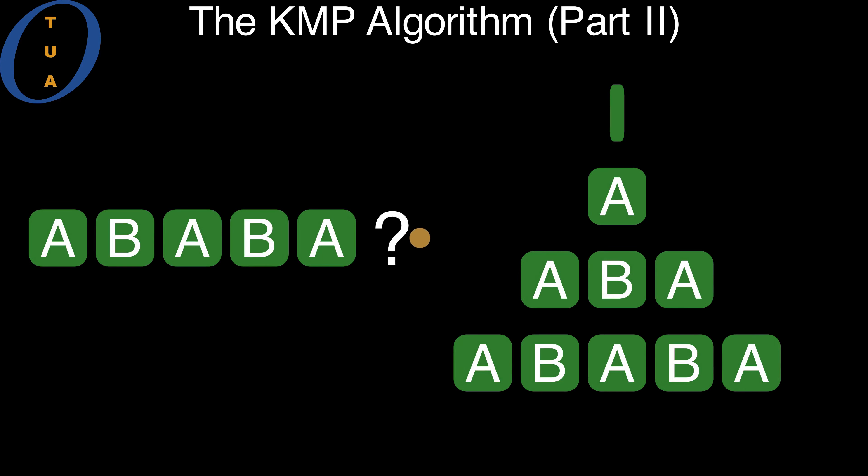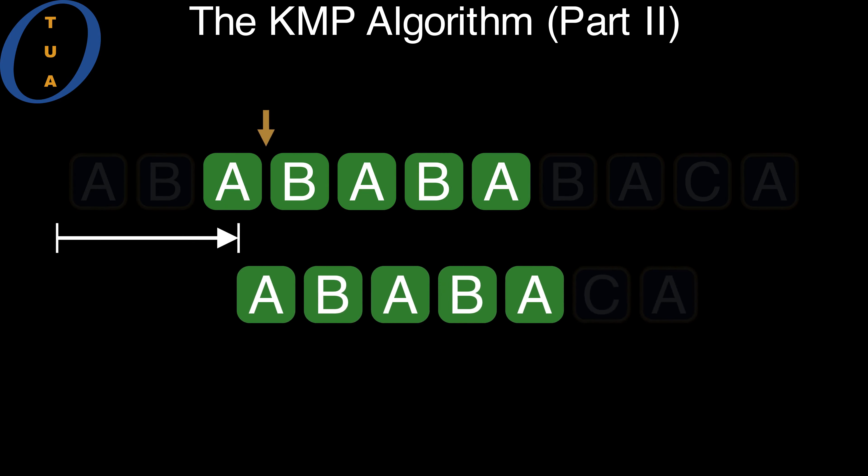But which one of these borders should we choose for the next alignment? First of all, we never use the entire overlap as a border, because there would be no progress.